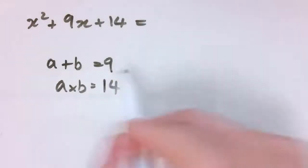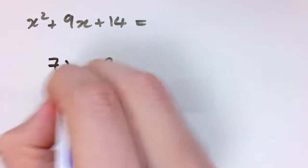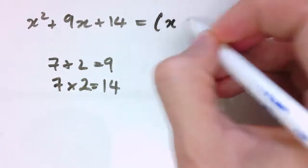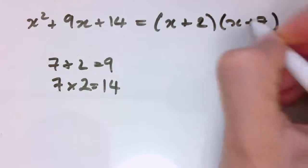You can think about it and you'll find that 7 and 2 works. 7 plus 2 is 9 and 7 times 2 is 14. So this would factorize as x plus 2 times x plus 7. You could check it by multiplying it out.